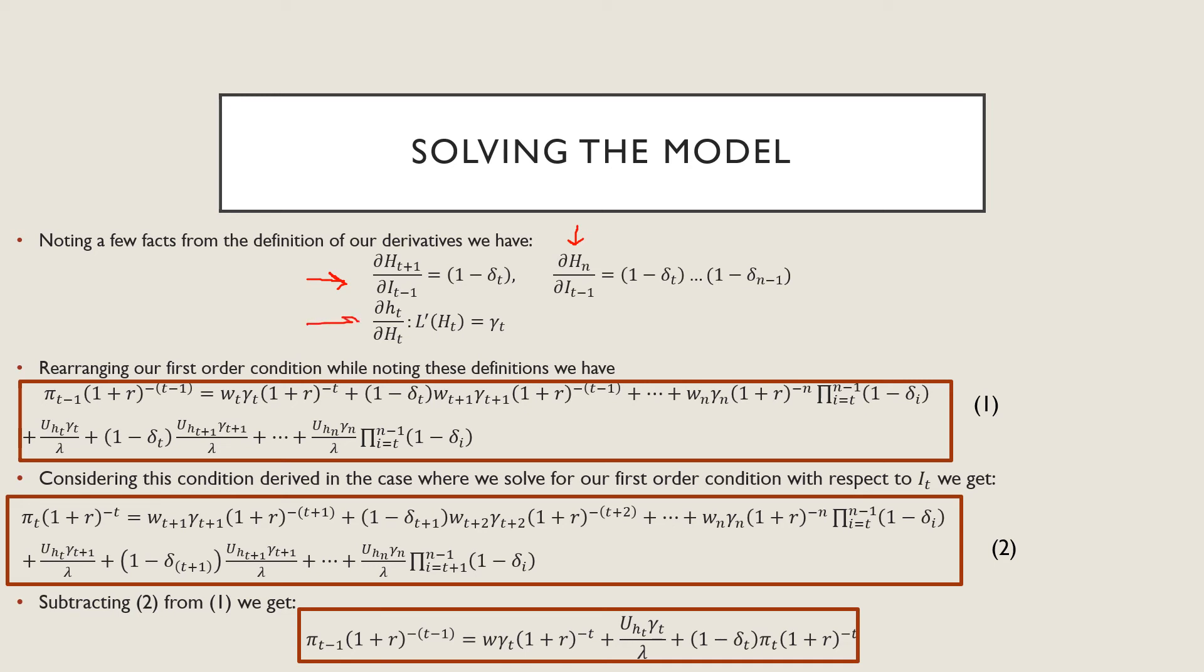And this last one down here, we're going to define this as the derivative of our health loss function, which is going to be equal to some gamma here. Rearranging our first order conditions while noting this result, we get this big mess in equation one. What we're going to do now is that we're going to take this condition except where we take the derivative with respect to it, not it minus one, and we're going to get the following result. If we subtract the second equation from the first, we get this little guy down here, which is going to be what we're going to work with from now on.